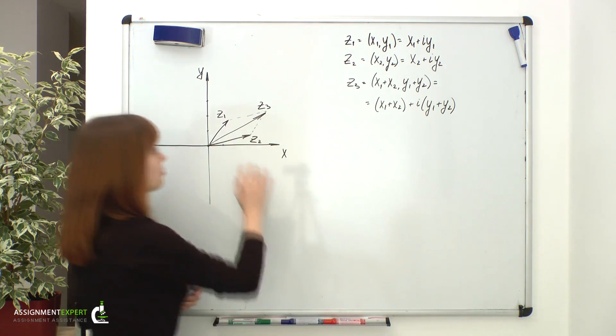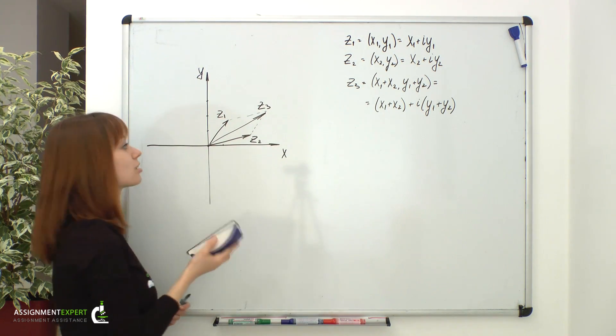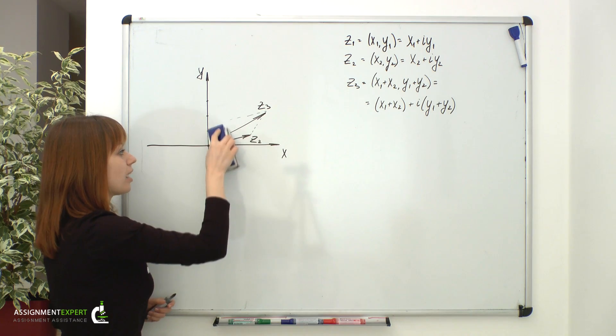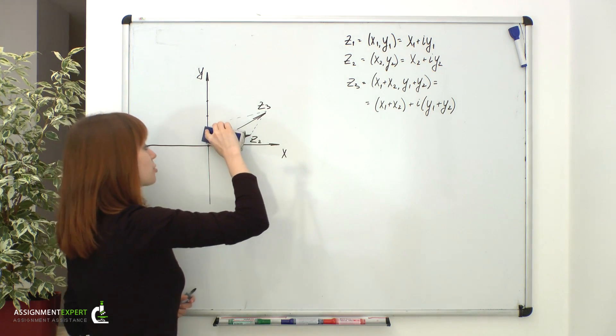Now we know that a complex number may be represented as a point or a radius vector on a plane, and up to now we only use rectangular coordinates.